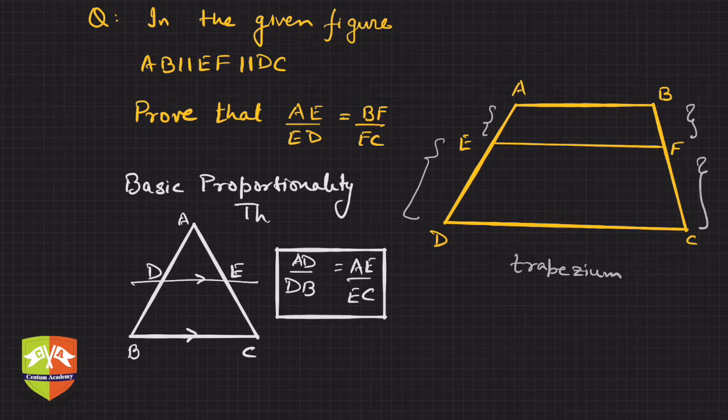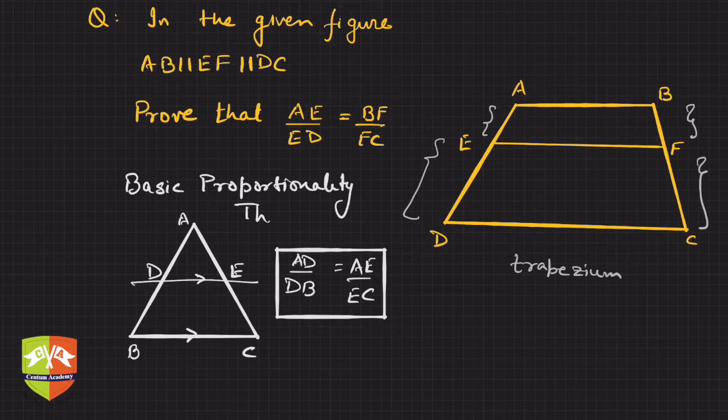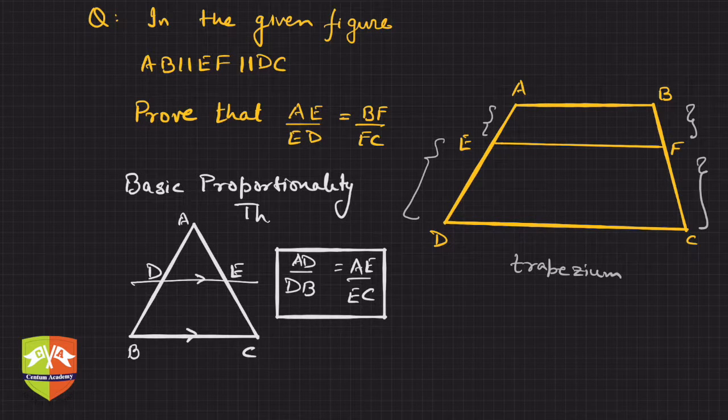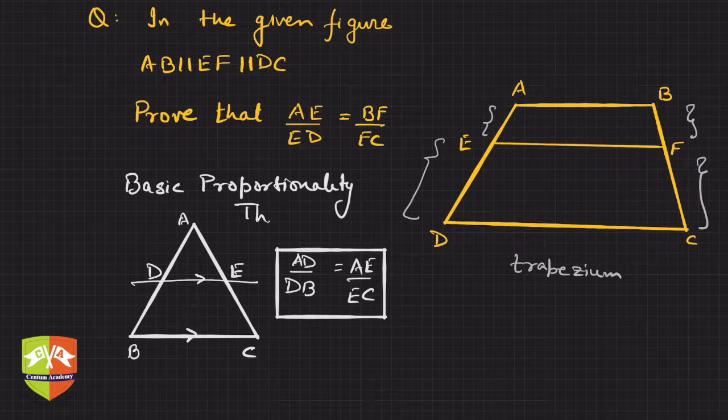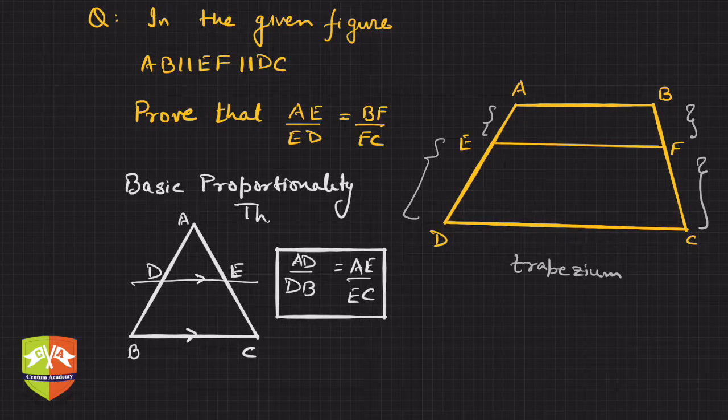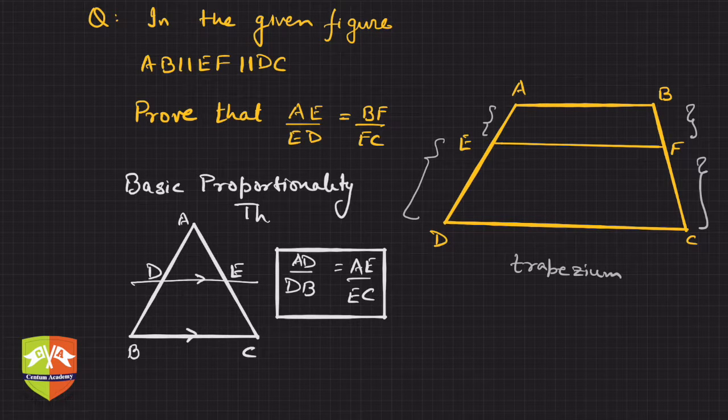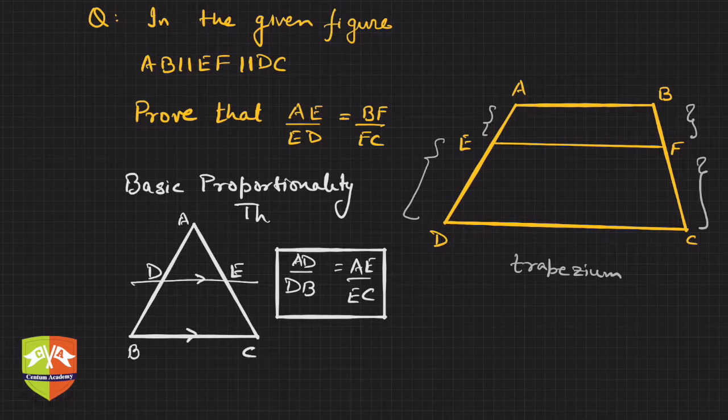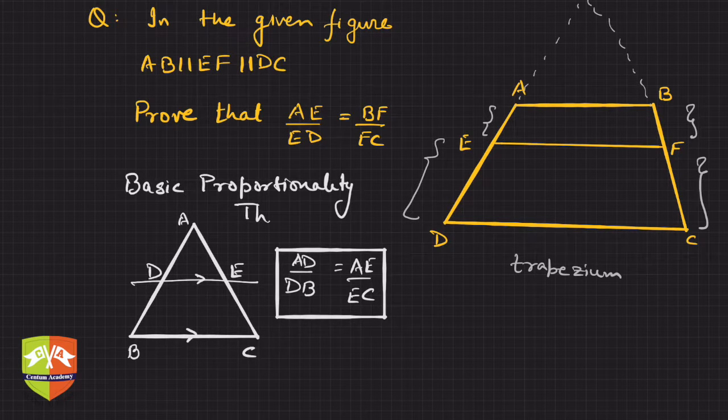Now though we have ratios and parallel lines here, we don't see any triangle here. So what could be the possibility? Hence basically we need to carve out a triangle over here.